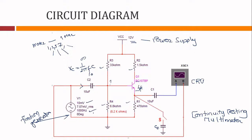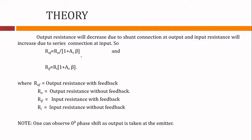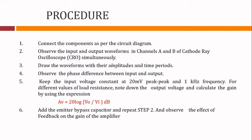As frequency increases, the capacitor reactance reduces and the full signal is available at the base in the mid-band. At very high frequencies, frequency roll-off occurs due to junction capacitances. The output resistance with feedback decreases by a factor of (1 + Av·beta), and the input resistance with feedback increases by a factor of Ri × (1 + Av·beta). Each topology offers a separate set of input and output resistances.